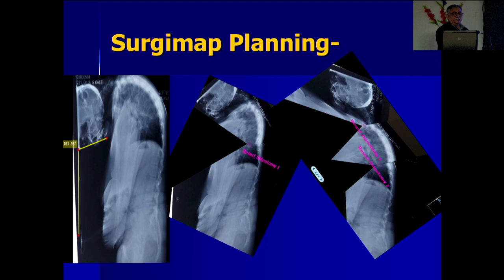In Surgery Map we planned that we need to do osteotomies at two levels — we need an osteotomy at C7-T1 level and then lower down in the dorsal spine to try and make her straight.